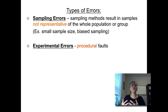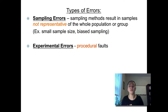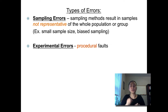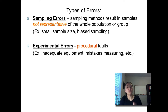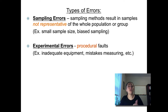The other type is an experimental error — a procedural fault, something done wrong when actually doing the experiment. This could include things like equipment not working properly or not measuring things accurately. Also, mistakes like measuring using the wrong units would be an example of experimental errors.